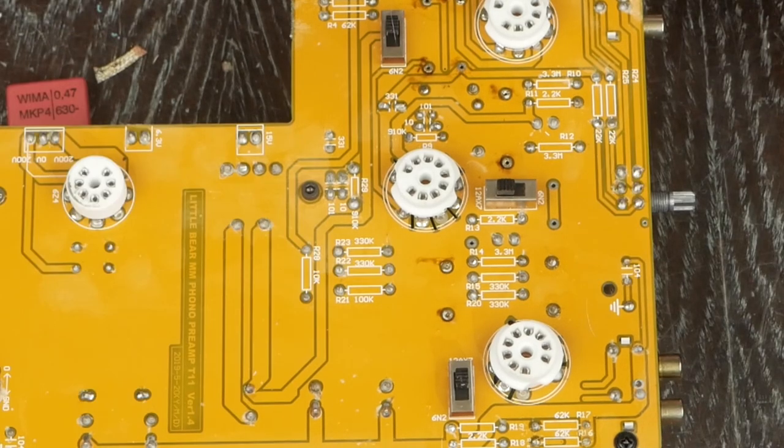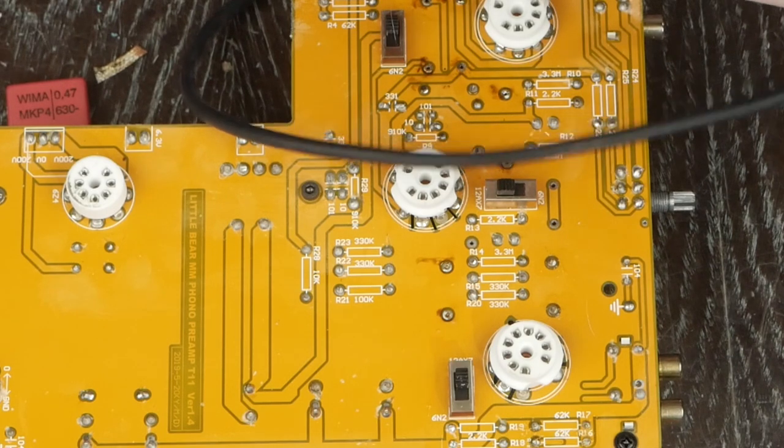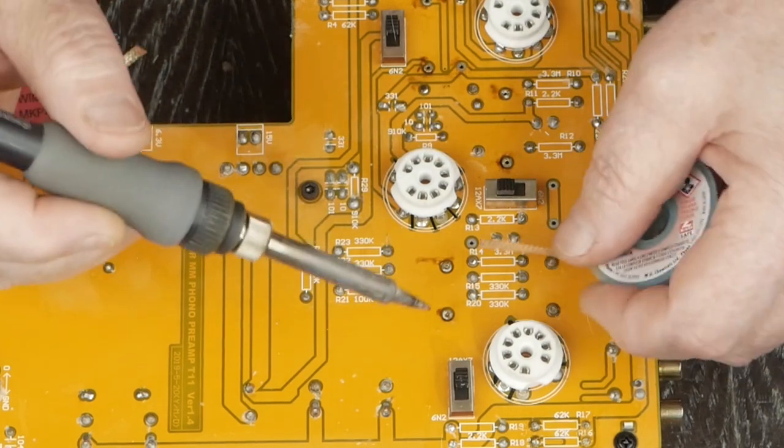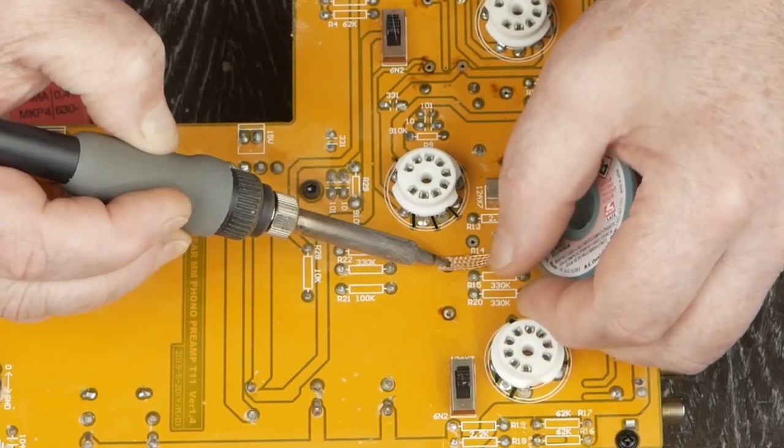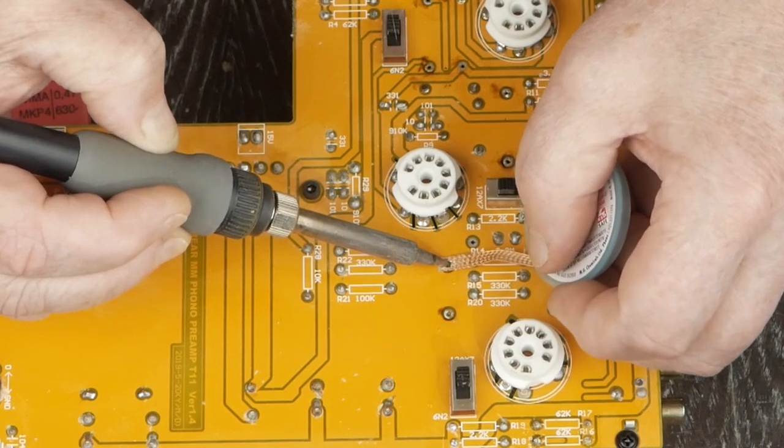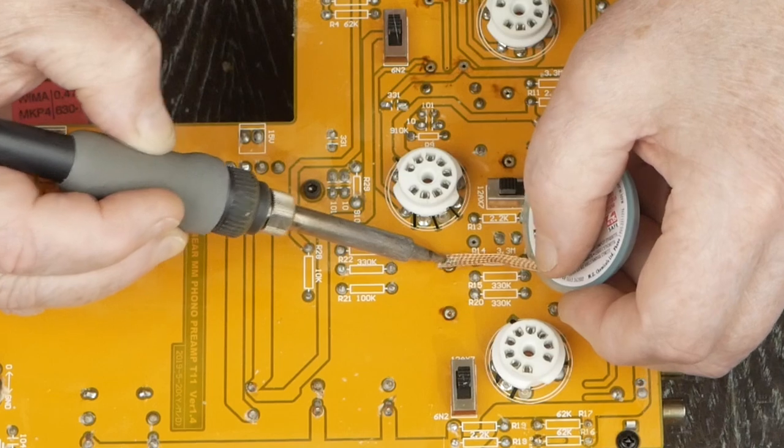Like I said, it wasn't a bad sounding little preamp just out of the box. The tubes it came with were a little noisy, which honestly a lot of 12AX7 tubes are, especially when you're using them in a high gain situation like these tube phono preamps are.